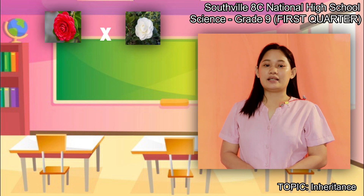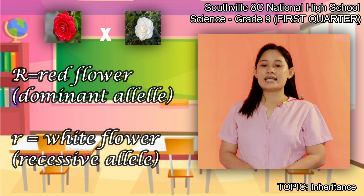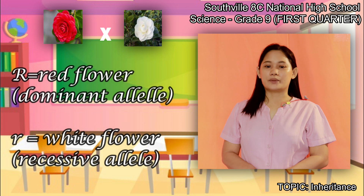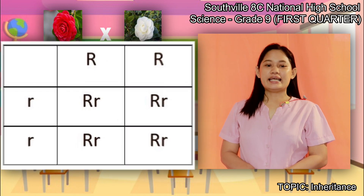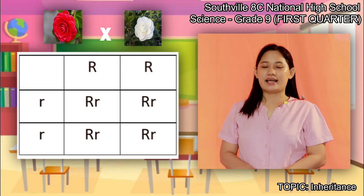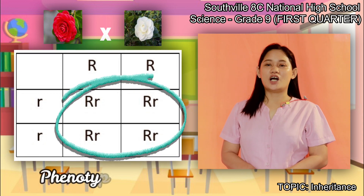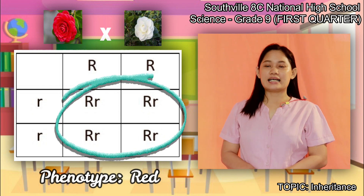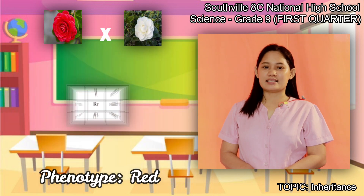Let us use capital letter R for the allele of red flower, which is the dominant allele, and small letter r for white flower, the recessive allele. Based on the cross, in Mendelian inheritance, the possible phenotypes of all offspring are all red, since red is the dominant allele and the phenotype of the recessive allele does not appear.